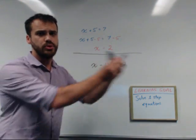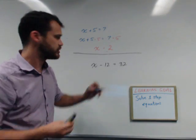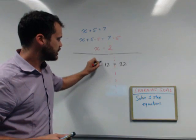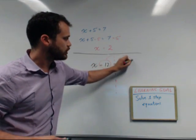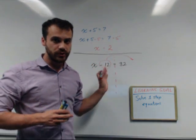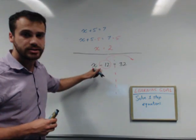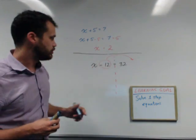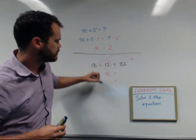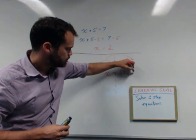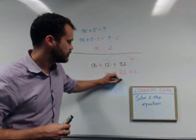and instead what we think about is moving terms across the equals sign. So if you imagine that line there, you need to take that negative 12 and move it across. Now when you move it across that equal sign, remember the sign's going to change. So in this case, it's going to change from a negative 12 to a positive 12. So my next line's going to look like x equals 32 plus 12 equals 44.